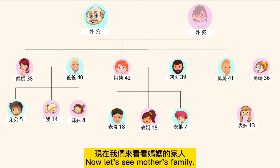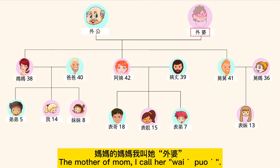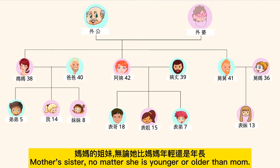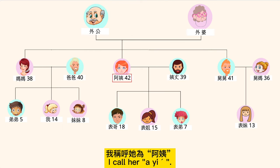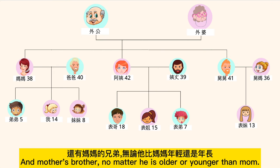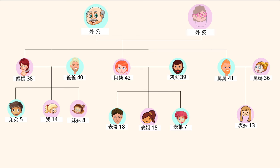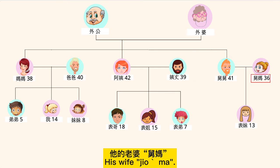Now let's see mother's family. The father of mom, I call him 外公. The mother of mom, I call her 外婆. Mother's sister — no matter if she is older or younger than mom — I call her 阿姨, and her husband 姨丈. Mother's brother — no matter if he is older or younger than mom — I call him 舅舅, and his wife 舅妈.